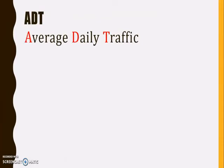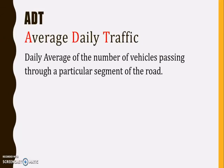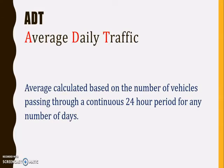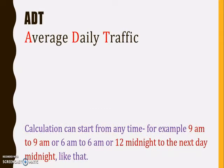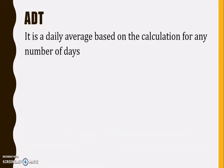ADT is the average daily traffic. The average number of vehicles passing through a particular segment of the road on a particular day is calculated. This average calculation may be based on the number of vehicles passing through a continuous 24-hour session for any number of days. The calculation can start from any time — for example, from morning 9 o'clock to the next day morning 9 o'clock, or 6 o'clock in the morning to the next day 6 o'clock. It is a daily average based on the calculation for any number of days.